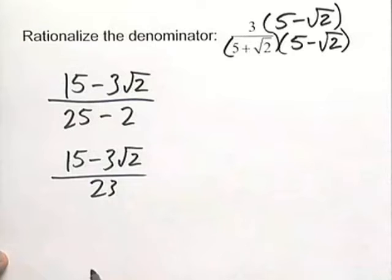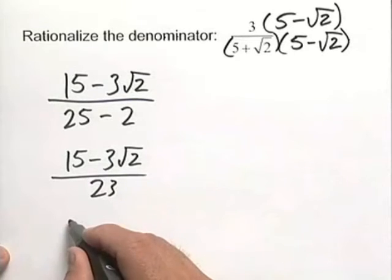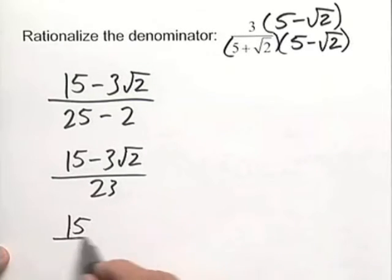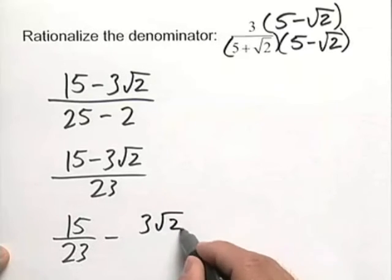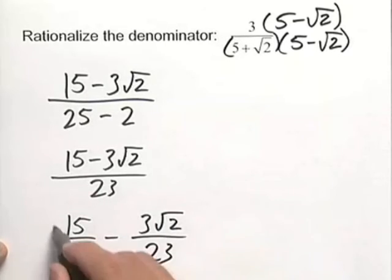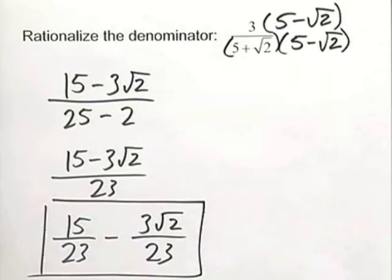And in some cases, people like the rational and the irrational separated. So we'll write this as 15 over 23 minus 3 square root of 2 all over 23. And this rationalizes our denominator.